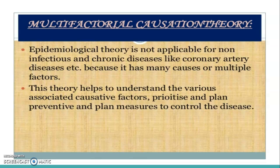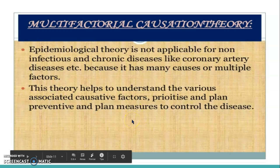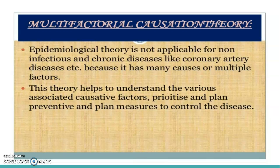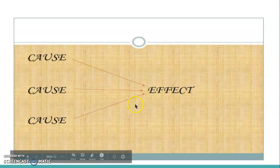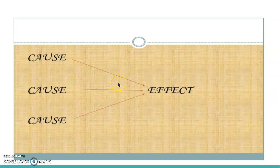The next theory is multifactorial causation theory. What this theory describes is that there are a lot of factors which are linked together or related to cause or produce a disease. For example, if you take coronary artery disease, it is caused by various factors — not only an agent or a germ. Diseases like diabetes, hypertension, and coronary artery disease are caused not by germs but by multiple factors. So the effect is due to different causes, and there are a lot of factors which cause the disease.